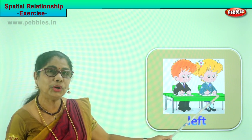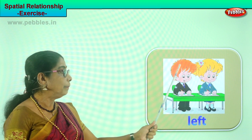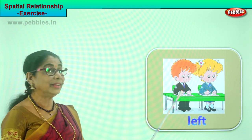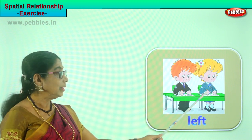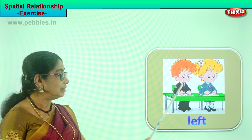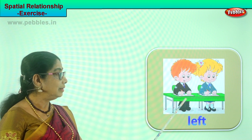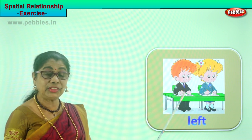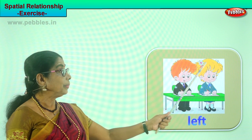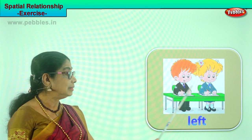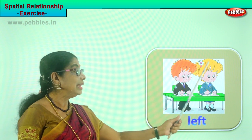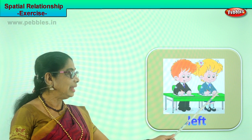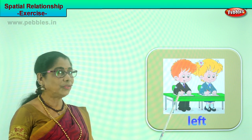And where is the boy sitting? The boy is sitting on the right side of the girl. This little boy is sitting on the right side of the girl. The little girl is sitting on the left side of the boy. Left, right.